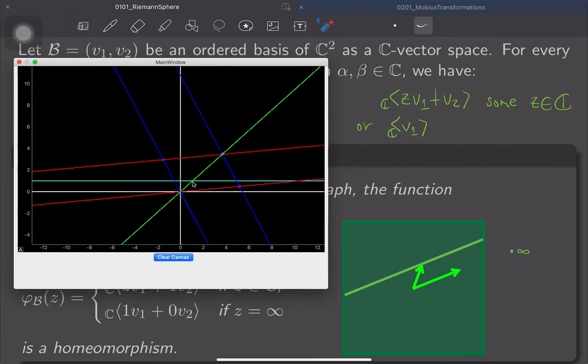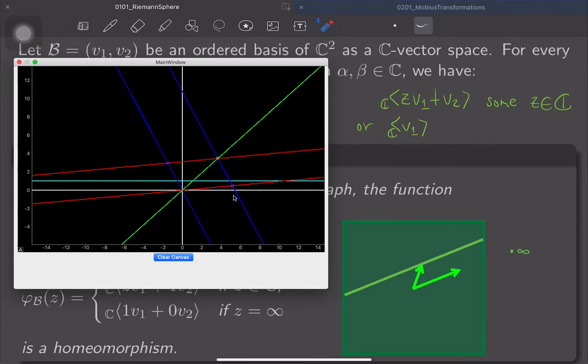And somehow, the C̄, which is C union infinity, we are not seeing the whole C̄ here. It's kind of like we are seeing it horizontally, really, in a way, or, okay, that's not completely accurate.